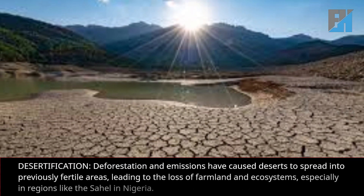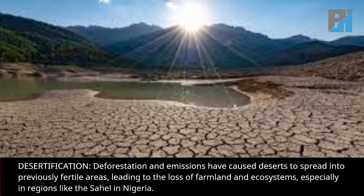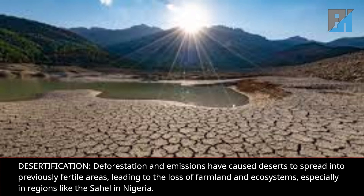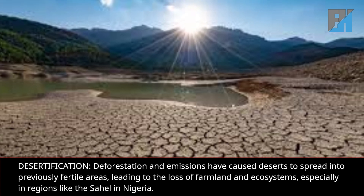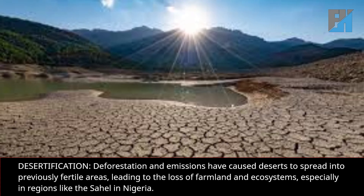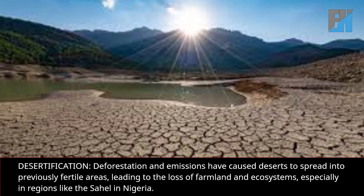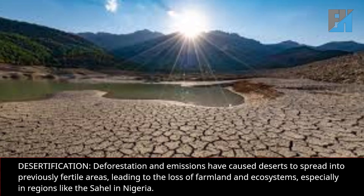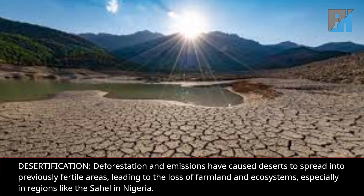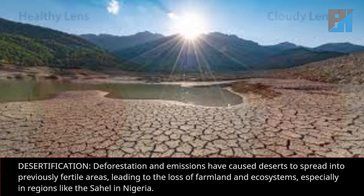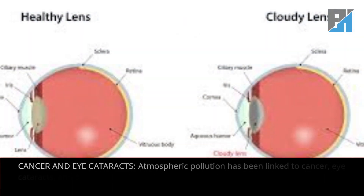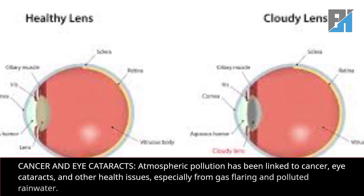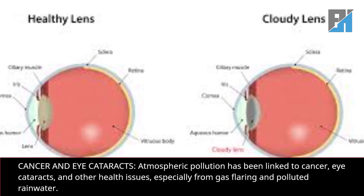Desertification: deforestation and emissions have caused deserts to spread into previously fertile areas, leading to the loss of farmland and ecosystems, especially in regions like the Sahara in Nigeria.